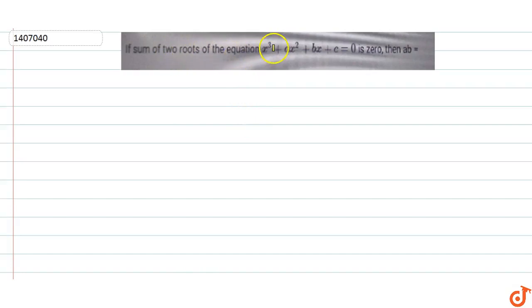In this question, the sum of two roots of the equation x³ + ax² + bx + c = 0 is zero. We need to find what ab equals to.